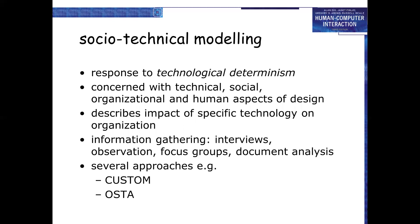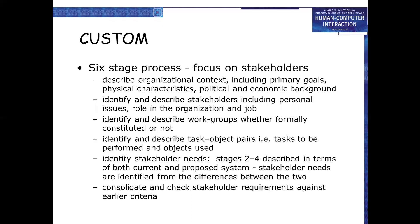Information gathering techniques include interviews, observation, focus groups, and document analysis. One approach is CUSTOM — a six-stage process focusing on stakeholders. It describes organizational context including primary goals, physical characteristics, and political and economic background. It identifies and describes stakeholders including personal issues, role in the organization, and job. It also identifies and describes work groups, whether formally constituted or not.